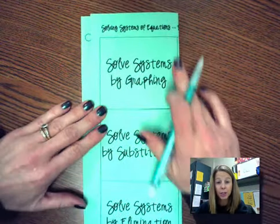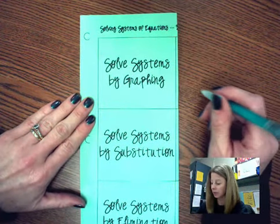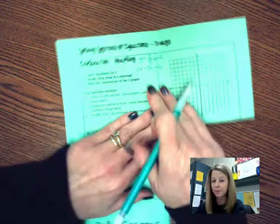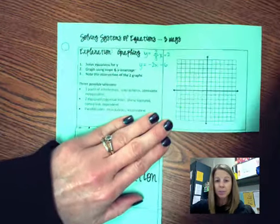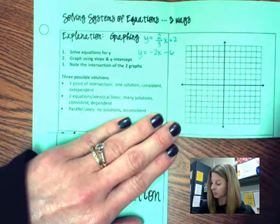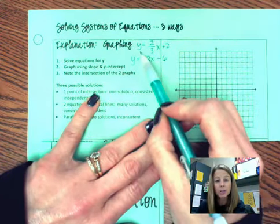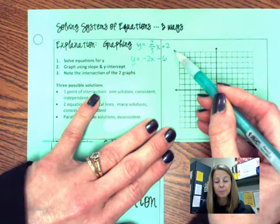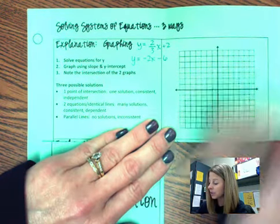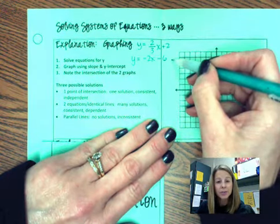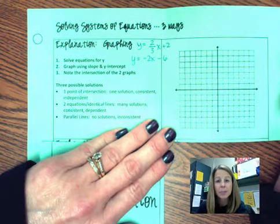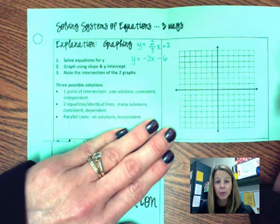We are going to look at graphing today. Go ahead and open your foldable to graphing, and copy down these two equations. The first equation is y equals two-thirds x plus two. The second equation is y equals negative two x minus six. If you have to pause the video to copy that down, go ahead and do that.